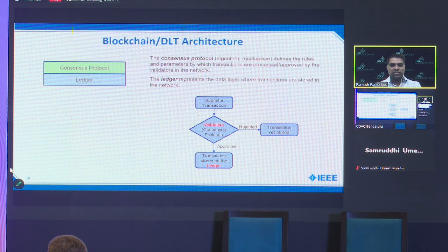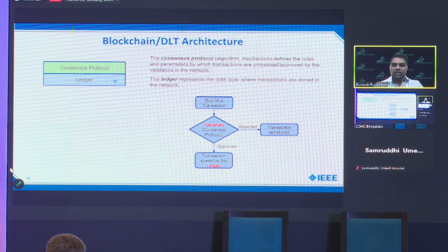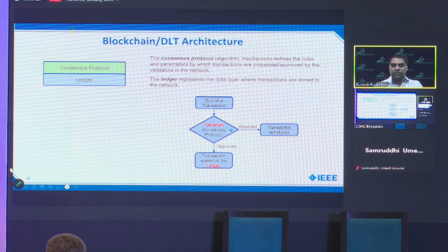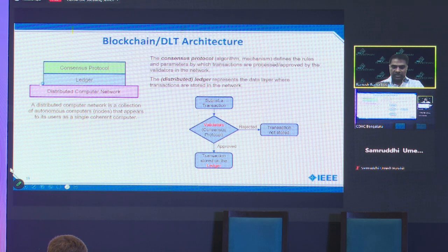For engineers in the room, the key components of a blockchain are: a ledger, and a consensus mechanism or protocol — how the participating parties come to an agreement on the ledger entries. There are also validators, who are the folks who approve the transactions or entries that go into the ledger. All of this runs on a distributed computer network, which is why it's called a distributed ledger.